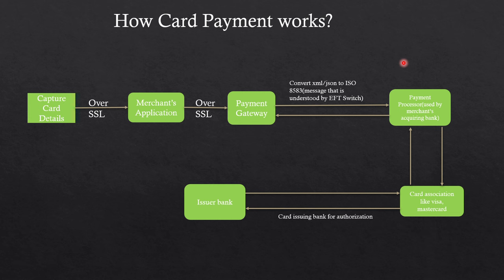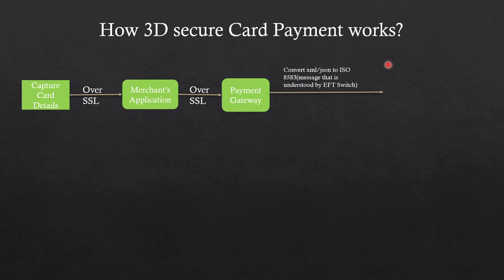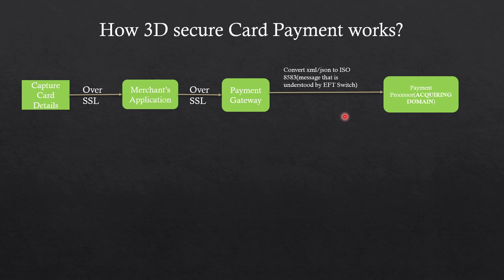Now for 3D secure card payment — the flow up to the payment gateway is the same as a normal payment. 3D means three domains are involved. The first domain is the acquiring domain on the payment processor and acquiring bank side, which is a small plugin provided by the acquiring bank. This plugin contains software used for encrypting and decrypting messages.